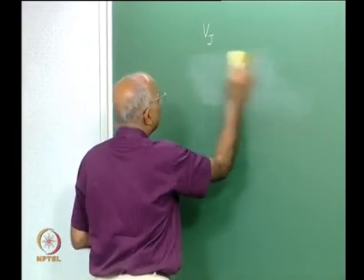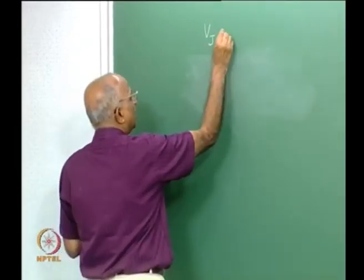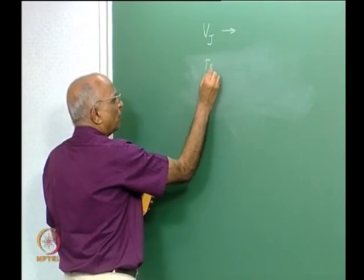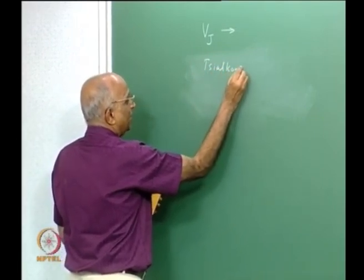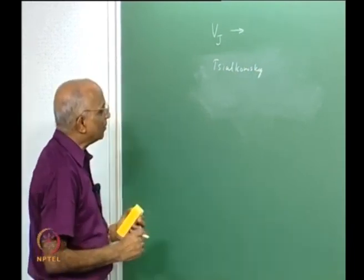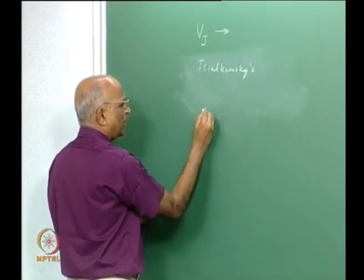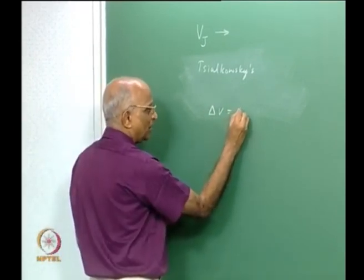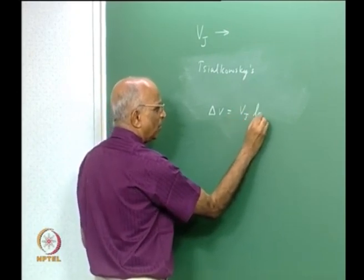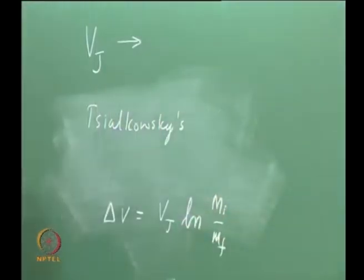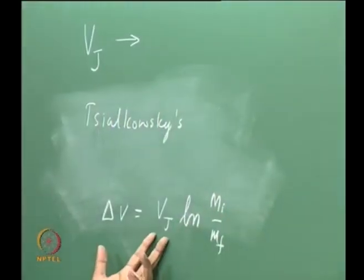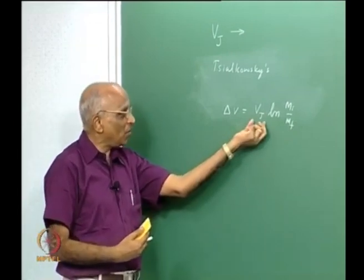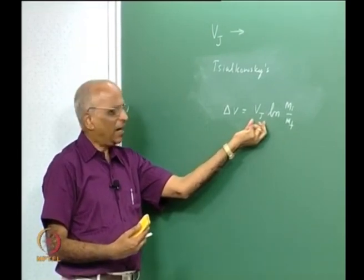Let us take a look at Vj. Should Vj be extremely large? When Tsiolkovsky formulated the rocket equation — we will go back to it today to conclude something about it — the delta V a rocket gets not only comes from its exhaust jet velocity Vj (or Isp), but also the logarithm of the initial mass to the final mass. When working on this, he felt that to get a high Vj, maybe electrons pulled in a magnetic field could help. But electrons have very low mass and therefore do not give you force.